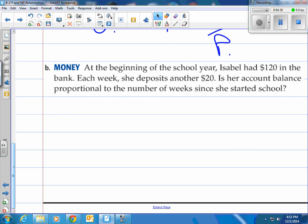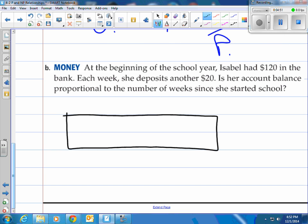How about B here. At the beginning of the school year, Isabelle had $120 in the bank. Each week, she deposited another $20. Is her account balance proportional to the number of weeks since she started school? Well, let's create ourselves a little chart. We'll go with how much money she has in the bank after so many weeks. And let's just do four of them. So after the first week, second week, third week, fourth week of school.